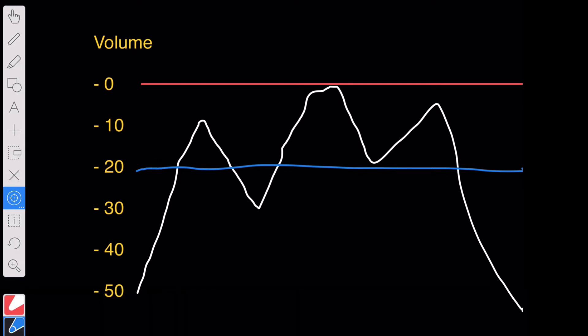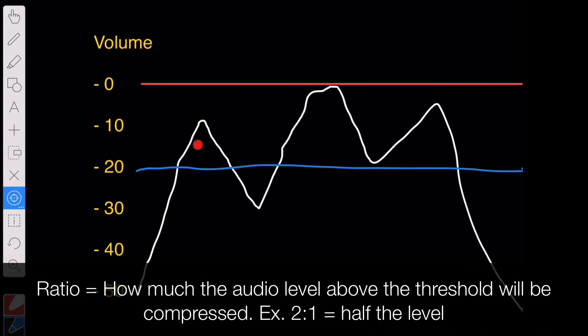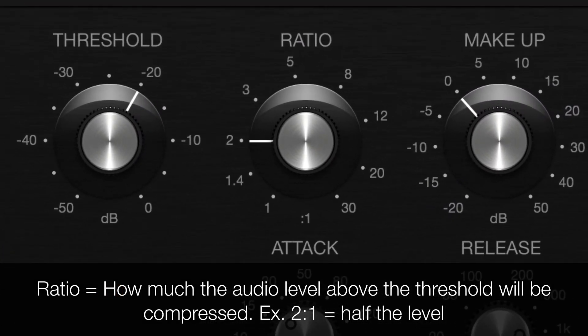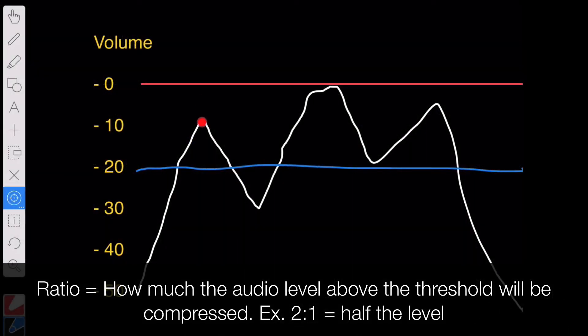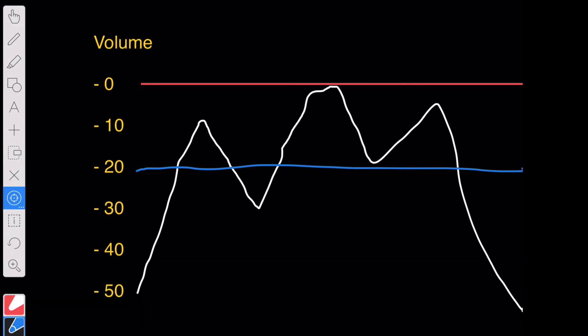Next is the ratio. And the ratio is how much the compressor will compress these peaks. So, if you set the compressor at 2 to 1, it means that it will basically compress the top, the value here, to be half of the distance from minus 20 to minus 10. So, basically, this will be peaking at minus 15 decibel.